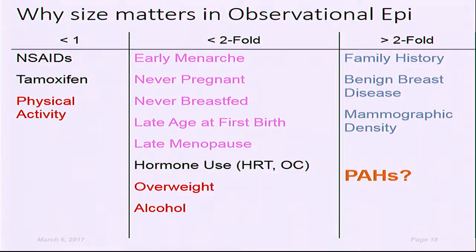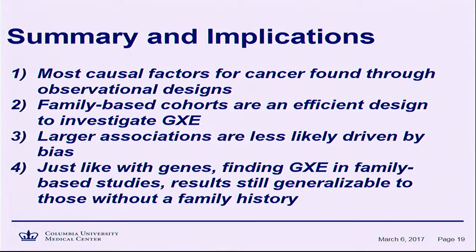Again, this is more proof of principle, but it supports that the modest effects we're seeing from environmental exposures and cancer risk are mainly what you'd expect at a population-wide level. When you have large exposure and high risk, you see much stronger effects. The reason we care about the strength of effect is that with all observational data there's always going to be bias. Having enough power and precision to estimate things across the spectrum helps us truly test gene-environment interaction. In conclusion, most causal factors for cancer are found through observational designs. We can use family-based cohorts as an efficient design to investigate gene-environment interaction. The larger the associations, the less likely they're driven by bias. Just as finding a gene in a family-based study can be generalizable to those without a family history, environmental factors found within these family-based settings can also be generalizable. Thank you.